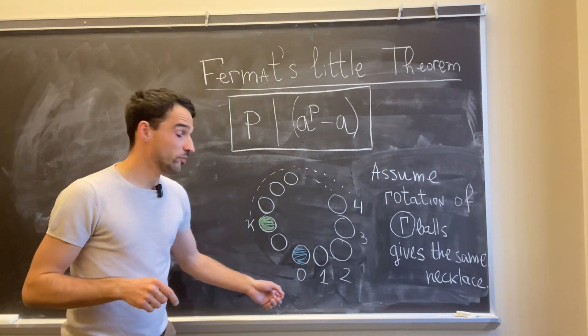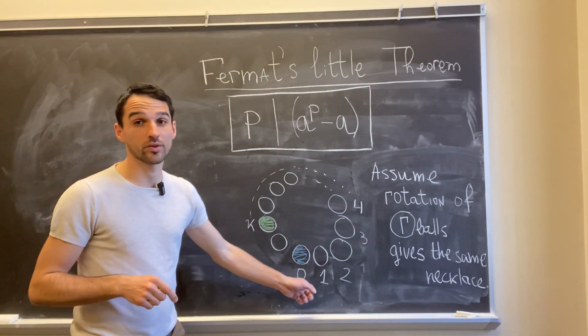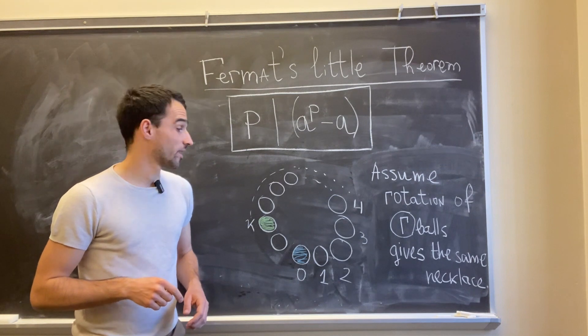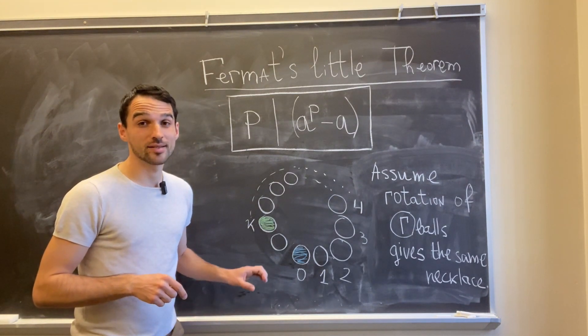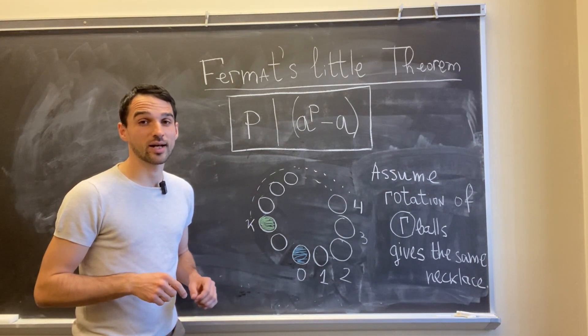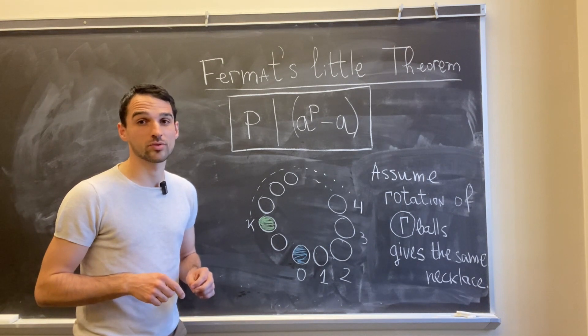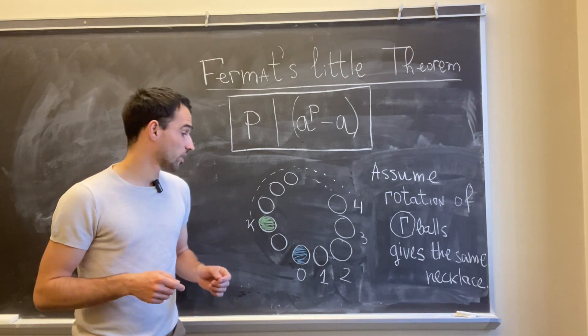So I can number my balls in my necklace with the numbers 0, 1, 2 up to p minus 1. And I know that in this necklace that I took, I have at least two balls with different colors.